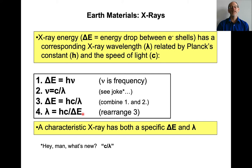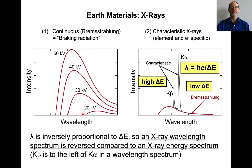So what does that mean? It means the characteristic x-rays that we were talking about have not just a specific energy drop — they also have a specific wavelength. And so if you have a high delta E, a high energy drop, then you'll have a lower wavelength. And if you have a lower energy drop, you'll have a higher wavelength.